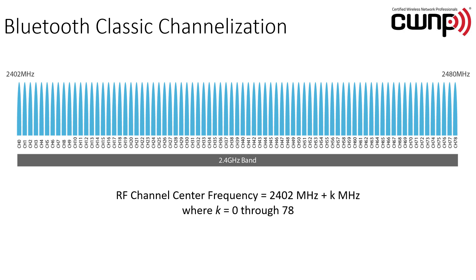These older Bluetooth physical layers utilize the 2.4 gigahertz band, just like BLE, but they have 79 channels available — channels 0 through 78. The channelization begins at 2402 MHz and goes all the way through 2480 MHz. The formula is the RF channel center frequency equals 2402 MHz plus k megahertz, where k is 0 through 78. So channel 0 would be 2402 MHz, channel 1 would be 2403 MHz, channel 2 would be 2404 MHz, and so forth.